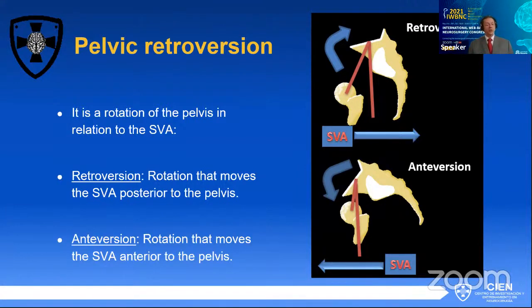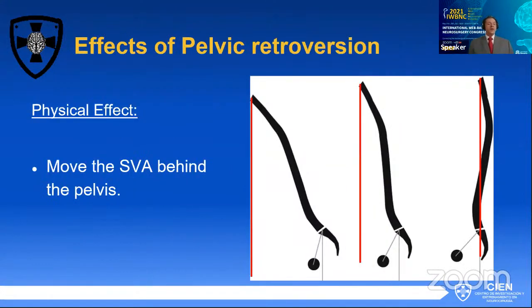Anteversion is going to be the opposite — when you do anteversion, that C7 plumb line is going to tend to go forward. So retroversion moves the C7 plumb line backwards; anteversion moves the C7 plumb line forward. It's very important to have this concept very clear, because sometimes it gives confusion. The net effect is very obvious: it's the shift of the C7 plumb line. As you do retroversion, you're going to shift that plumb line backwards, and as you can see in this photograph, that has a very big compensating effect for kyphosing deformities.